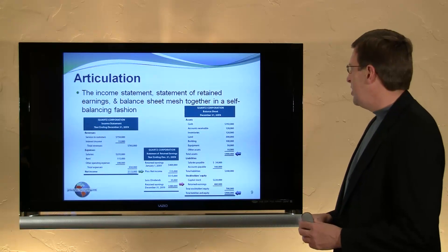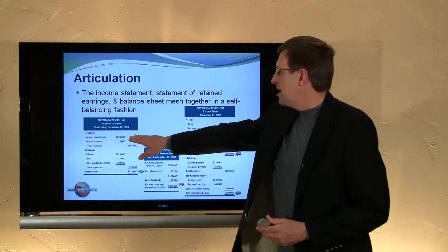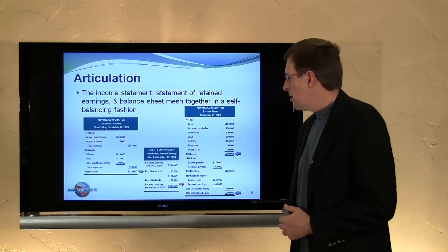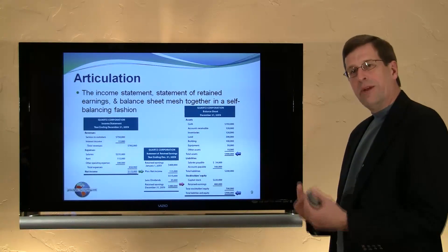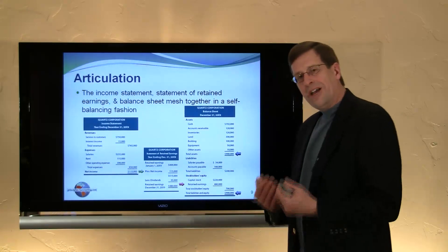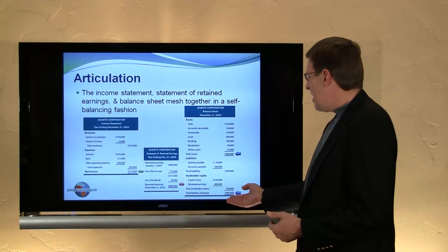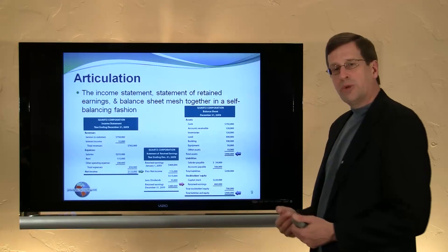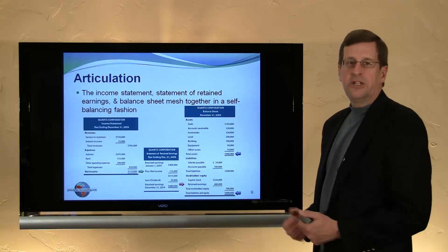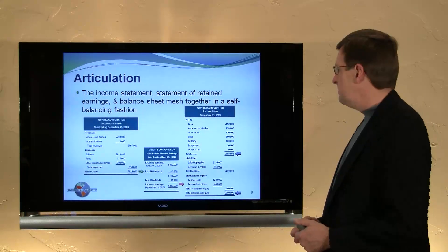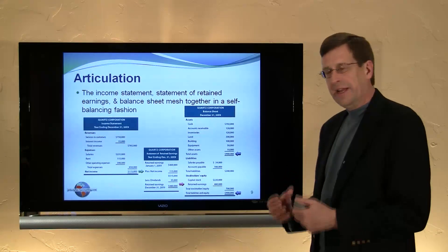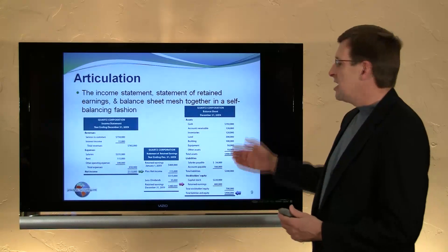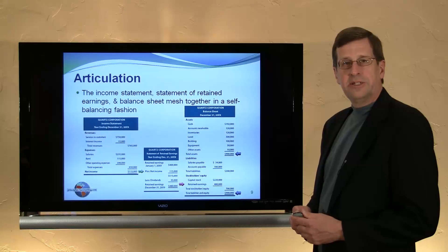To illustrate why this self-balancing system works, consider adding one more transaction: one extra dollar of revenue. Services to customers become $750,001 with no additional expenses, so net income becomes $115,001, ending retained earnings becomes $480,001, and total liabilities and equity becomes $900,001. But we also received an extra dollar of cash, so cash becomes $192,001 and the balance sheet is preserved. It's a brilliant system — simple but brilliant — capturing all transactions into a set of articulating, self-balancing financial statements that investors use to make decisions about business enterprises.